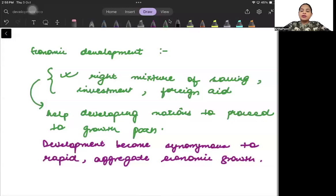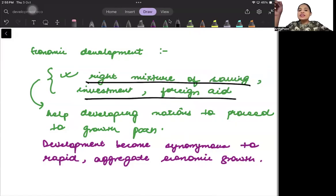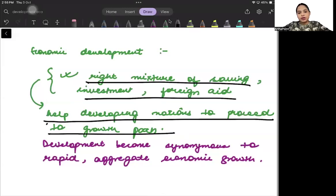Economic development has always been thought of as a combination of multiple things. When we talk about these multiple things, it includes your saving, investment, foreign aid, and many other factors. These things together lead to economic development. How much saving you have done, the amount of capital invested in your economy, how much foreign aid you got - this tells what will be your path of development. It helps developing nations proceed to the growth path.